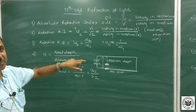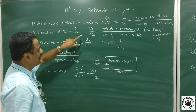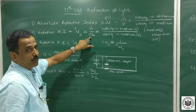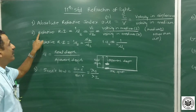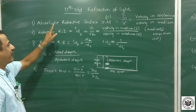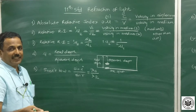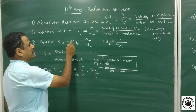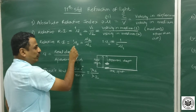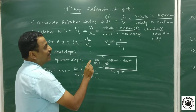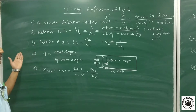Relative refractive index means the numerator involves any medium other than air or vacuum. It is written as 2 with respect to 1, equal to v1 upon v2 — that is, velocity of light in medium 1 upon velocity of light in medium 2, where medium 1 is other than air. Relative refractive index is also expressed in terms of absolute refractive indices: refractive index of medium 2 with respect to 1 equals mu2 upon mu1. Consequently, 2 with respect to 1 equals 1 upon 1 with respect to 2.